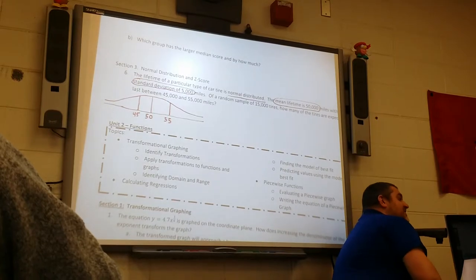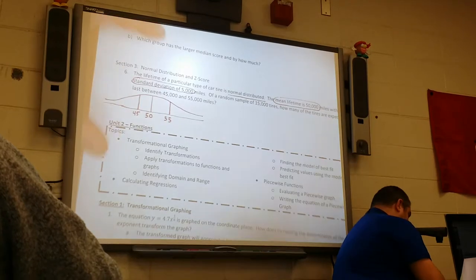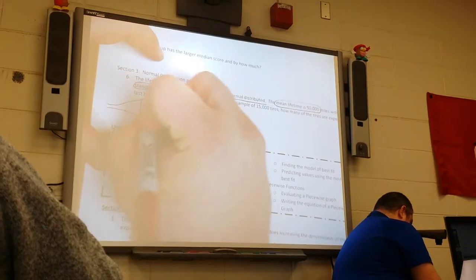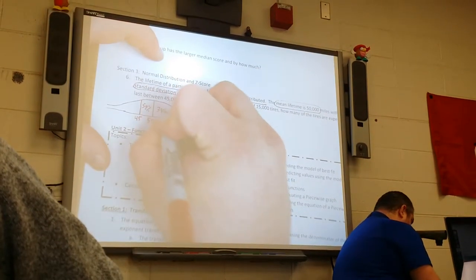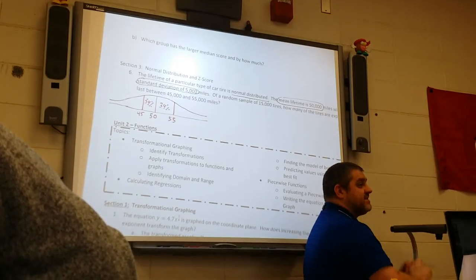So you do need to know the percentages that will go in the normal distribution curve. I mean 34, 34. Both of these are 34. Because it adds up to be 68.